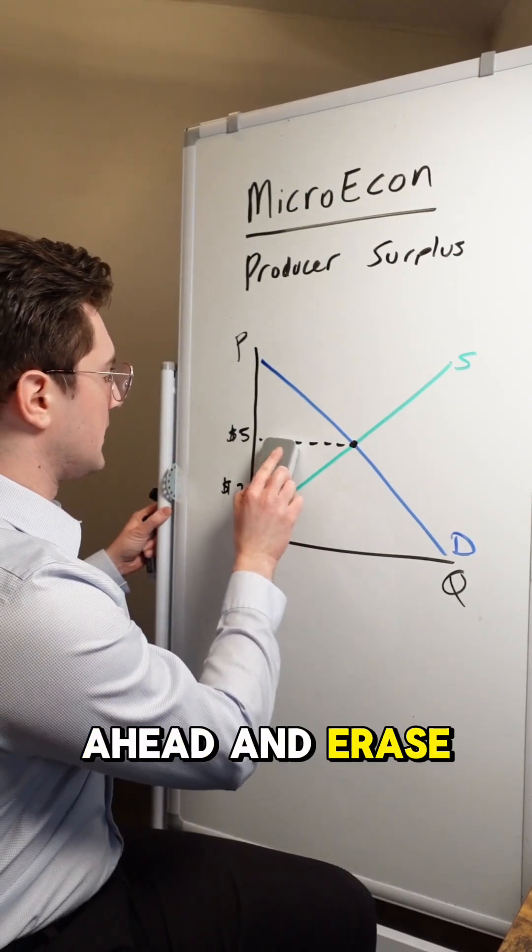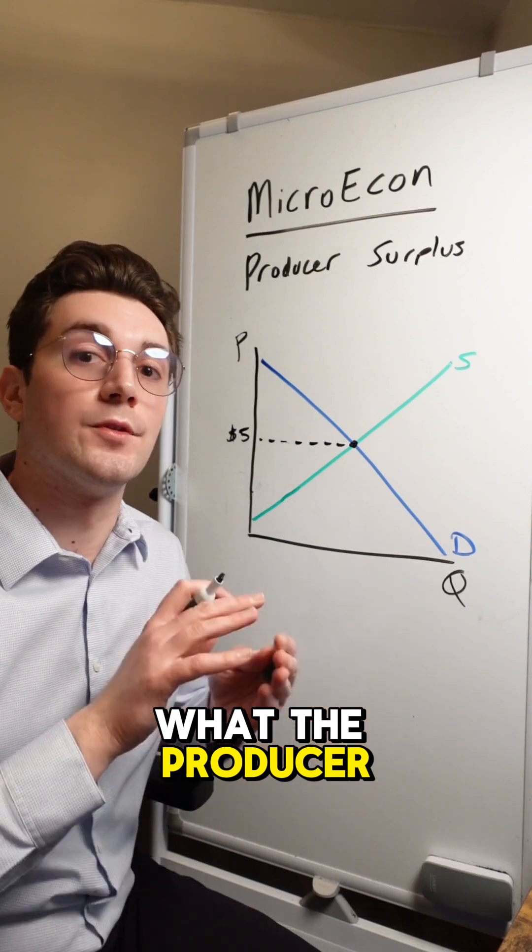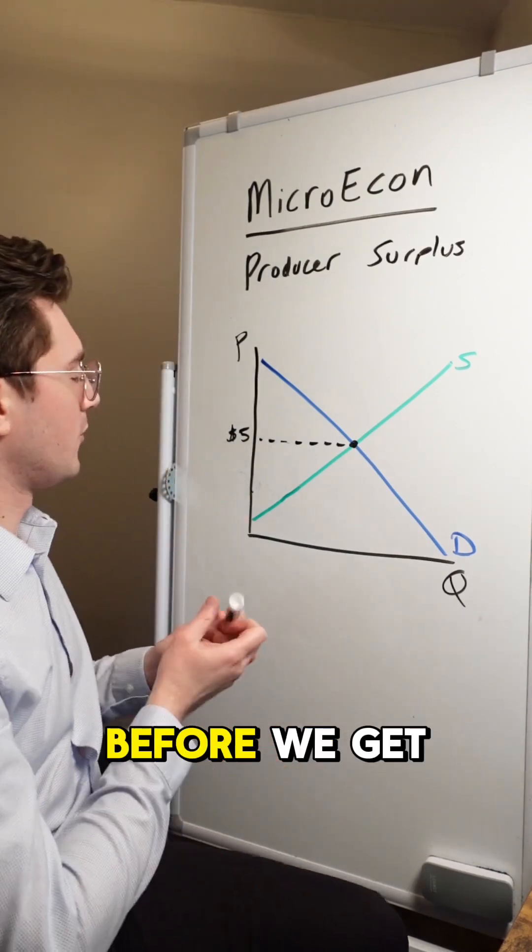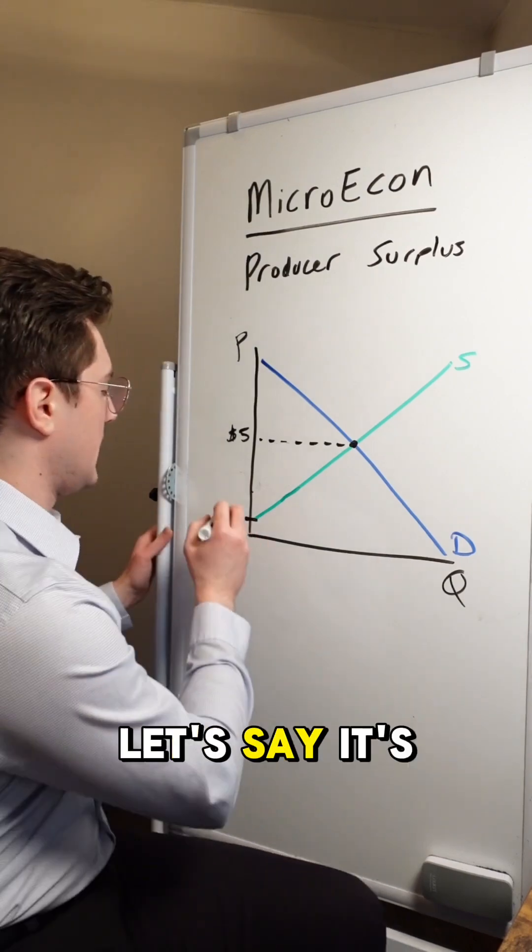All right. So with that considered, I'm going to go ahead and erase our individual point right here so that we can start to understand what the producer surplus triangle looks like. Before we get to that, we got to understand what this minimum willingness to sell price is. Let's say it's $1.